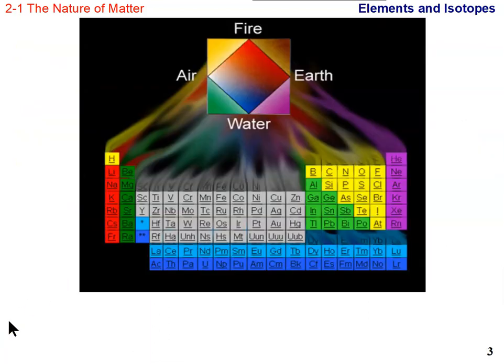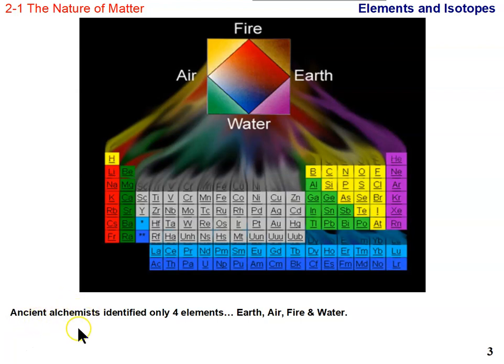Of course, we didn't always know this about the atom and the nature of matter. A long time ago, there were scientists, and they were scientists, but there was a little bit of wizardry mixed in, and they were known as alchemists. They identified only four elements. Instead of all the elements that we see in the periodic table, they felt that all matter was made up of four basic elements: earth, air, fire, and water.